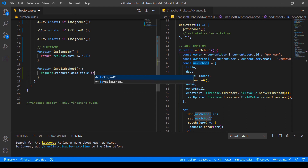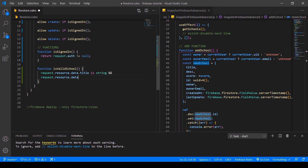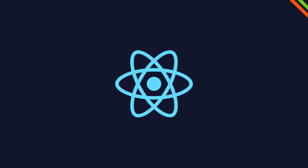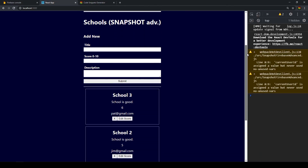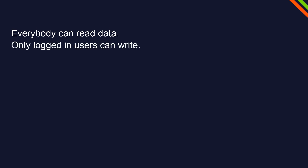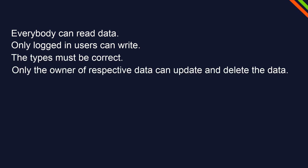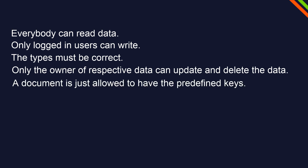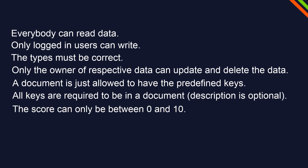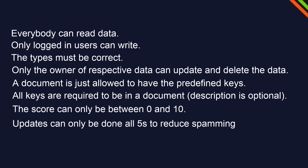Today I'm going to show you some rules I think are good practice to implement, and I'm also going to show you how to do that easily with a helpful tool I built. This is our school directory, and today we want to secure it so that everybody can read data, only logged-in users can write — create, update, and delete. The types must be correct, only the owner of the data can update and delete it, a document can only have predefined keys, all keys are required except the optional description, the score can only be between 0 and 10, and updates can only be done every 5 seconds to reduce spamming.